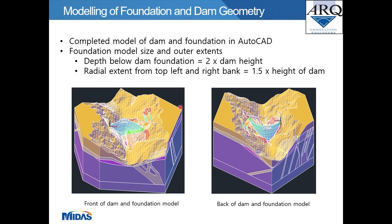The completed AutoCAD geometry model shows the dam clearly modeled with all the various monoliths, the spillway, and the cushion, and the foundation model comprising all the various rock layers in different colors. The foundation model extent was taken as two times the dam height for the full bottom extent, and one and a half times the dam height for the radial extent from the left and right banks — in line with dam publications such as USBR and FERC.